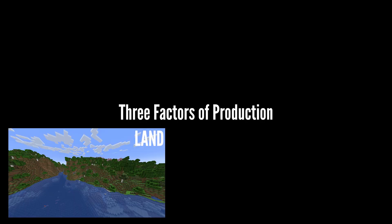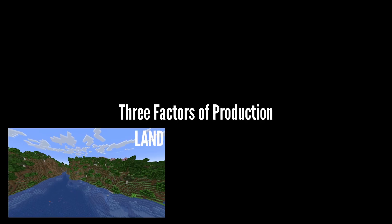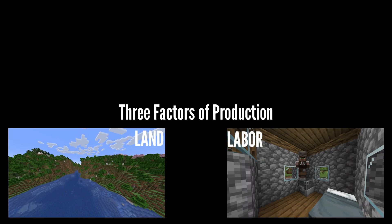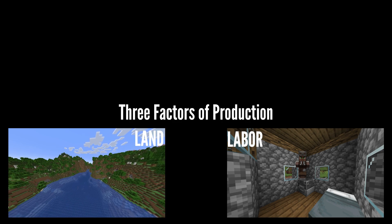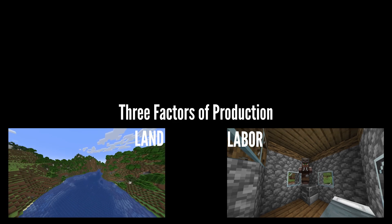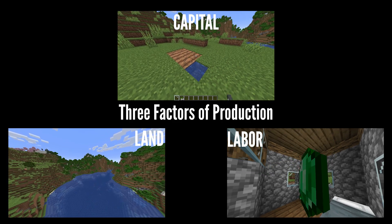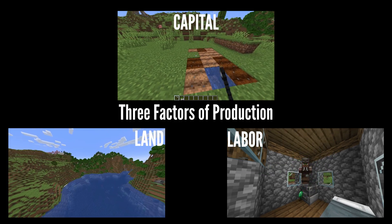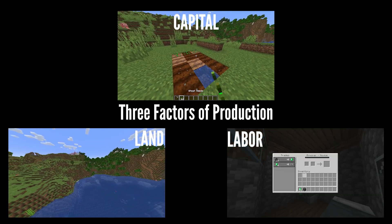There are three factors of production. Land, like the natural resources around us. Labor, like paid labor. And capital, the things that go into making goods.